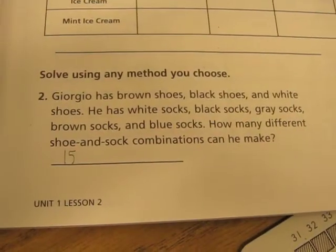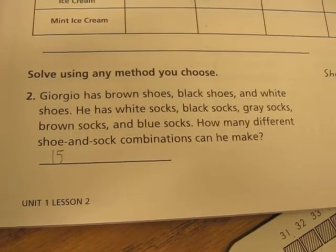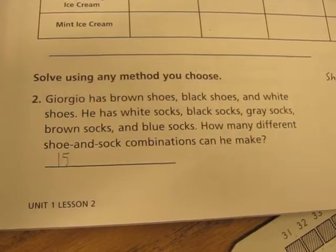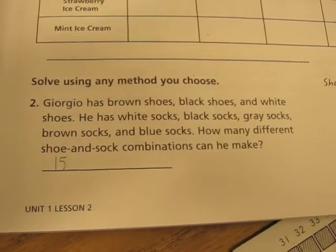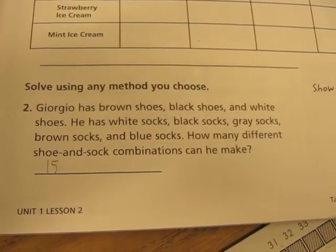Giorgio has brown shoes, black shoes, and white shoes. He has white socks, black socks, gray socks, brown socks, and blue socks. How many different shoe and sock combinations can he make?